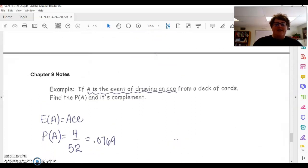Another example, if A is the event of drawing an ace, find probability of A and its complement. So the probability of drawing an ace is we have 4 chances out of 52 cards. So we have 0.0769.